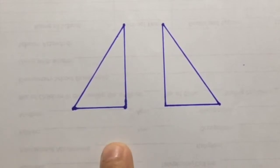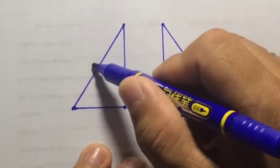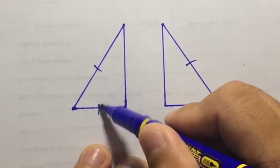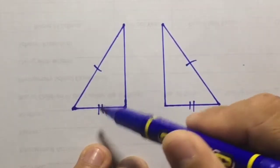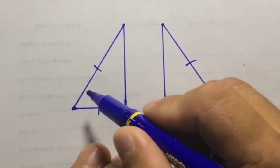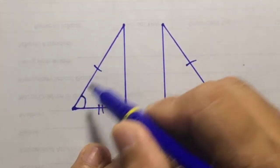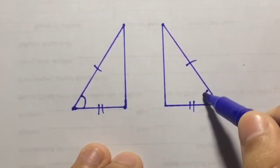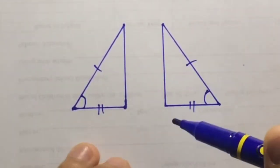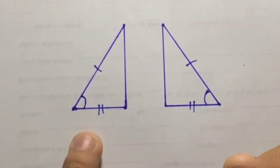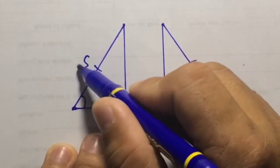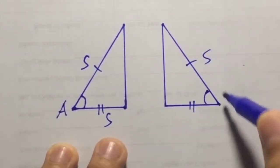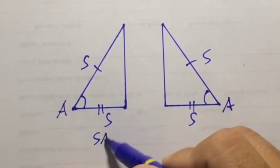So if we are given two triangles, we just need to prove two sides — for example, this side here and this side here — and we should prove that these two sides are congruent, along with the included angle, which is the angle between the two sides. If we can prove that these pairs of angles and sides are congruent, then we can say that the two triangles are congruent using the SAS congruence postulate.